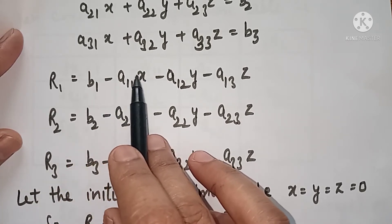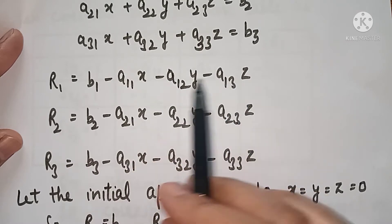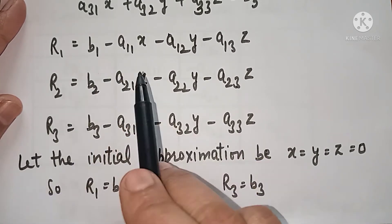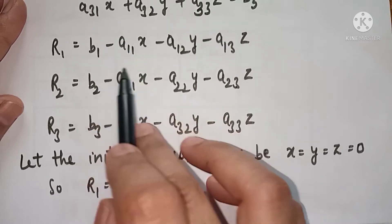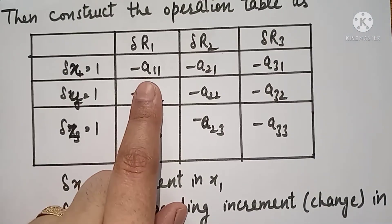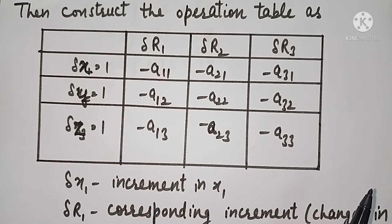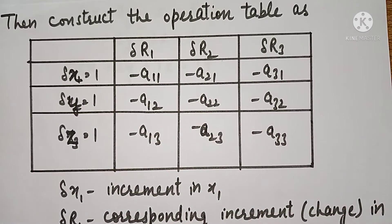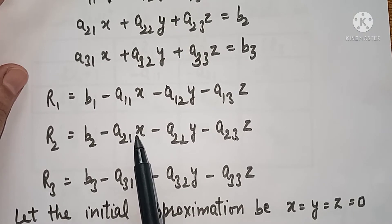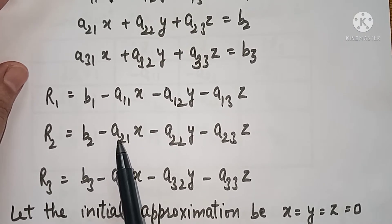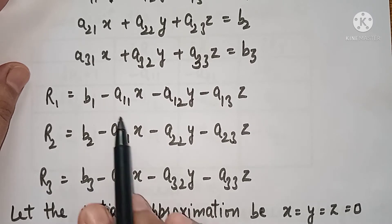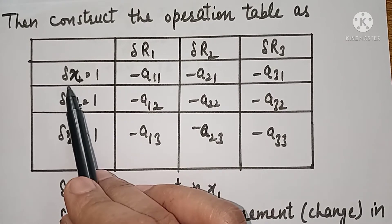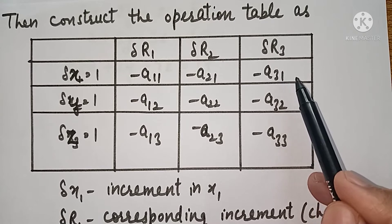B1 minus a11 — all other terms are 0 — so R1 में change हुआ minus a11 का। तो operation table में यहाँ पर लिखेंगे minus a11। Similarly, जब x में change हुआ 1, तो R2 में change हुआ minus a21, और del R3 में minus a31 का change हुआ। जब del y को 1 put करेंगे, तो R1 में change आएगा minus a12 का, R2 में minus a22 का, और R3 में minus a32 का। Similarly, जब del z को 1 लेंगे, तो R1 में minus a13, R2 में minus a23, और R3 में minus a33 का change आएगा।